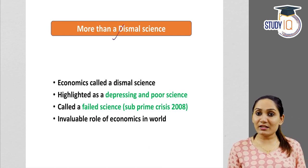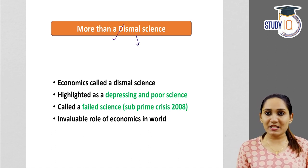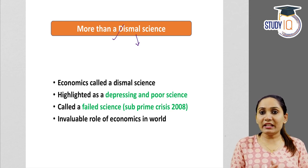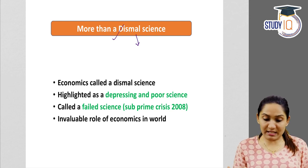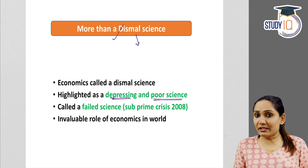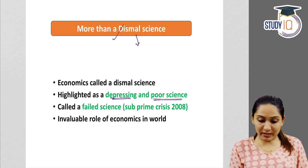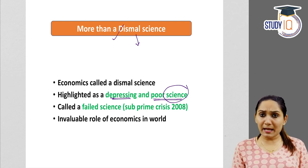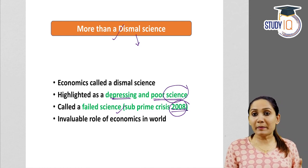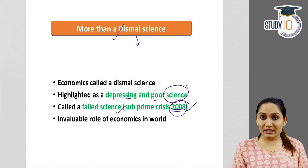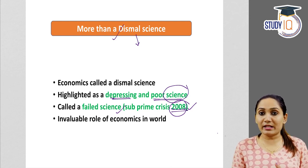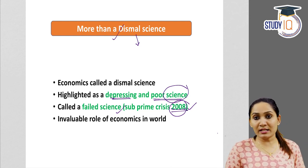First, whether economics is a dismal science or more than a dismal science. Dismal means very gloomy, very negative. Many people have said economics is a dismal science because it is quite depressing and cannot be completely proven as scientific. A key example critics point out is the subprime crisis of 2008, which showed that economic theories and scientific logic did not prove effective during that crisis.